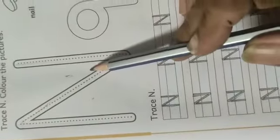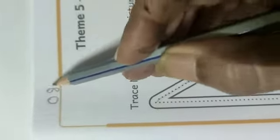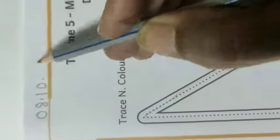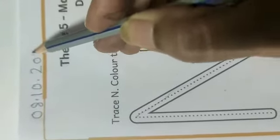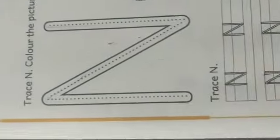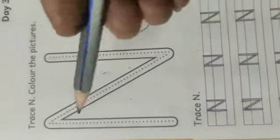This is letter N. First we will mention the date. Today is 8th October 2021. And now we will trace letter N here.